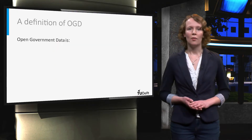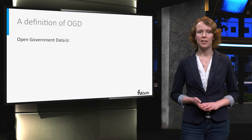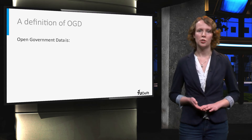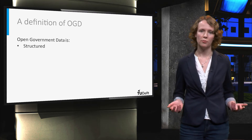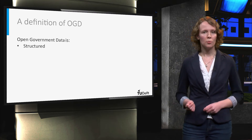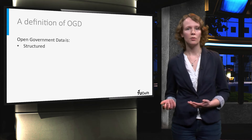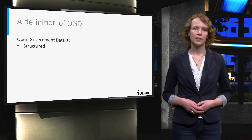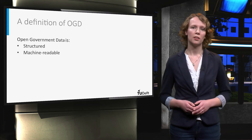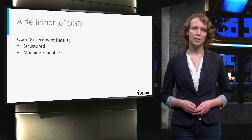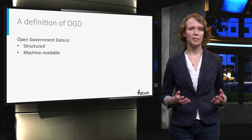So how do we define open government data? Researchers may have different opinions about this. However, they generally agree that open government data should be structured, so it should be Excel spreadsheets or comma-separated value files, but it can also be in documents, videos, and audio files. The data should be machine-readable, so that machines such as computers are able to interpret it and useful insights can be obtained.